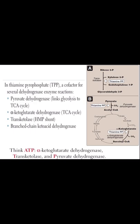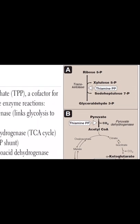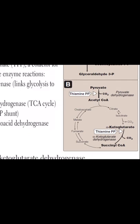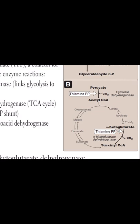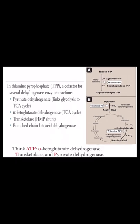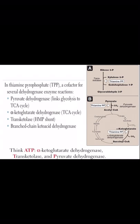The diagrams show the transketolation in the HMP pathway — how ribose-5-phosphate and xylulose-5-phosphate interconvert, giving sedoheptulose and glyceraldehyde-3-phosphate. They also show how pyruvate converts to acetyl-CoA via pyruvate dehydrogenase with TPP as coenzyme, and in the TCA cycle how alpha-ketoglutarate converts to succinyl-CoA with TPP as coenzyme. All four to five functions should be written when answering questions on TPP's mechanism of action.